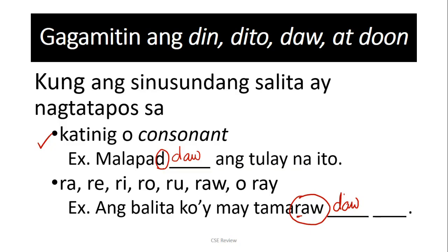Ngayon, bakit ang rule na ito, why is it here? The reason for that is this: pangit kasi pakinggan yung 'may tama raw raw.' Di ba? Kasi umulit. Pangit din yung 'para rito.' Pag-ing parati rito, pwede. Kasi, iniiwasan natin yung mangyari yung ra-ra or re-ra or in this case, raw raw.